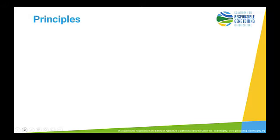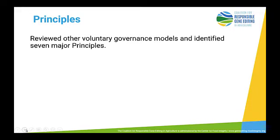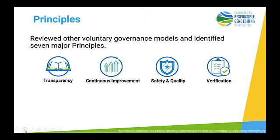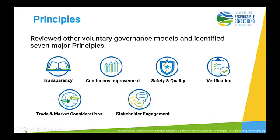There are seven basic principles included in the framework. Many came from other voluntary governance models, but a couple are novel to this framework. The seven principles are: transparency, continuous improvement, safety and quality, verification, trade and market considerations, stakeholder engagement, and social considerations.